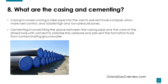What are casing and cementing? Casing involves running a steel pipe into the well to prevent hole collapse, allow more well control, and isolate high and low pressure zones. Cementing involves filling the space between the casing pipe and the walls of the drilled hole with cement to stabilize the wellbore and prevent formation fluids from contaminating the groundwater.